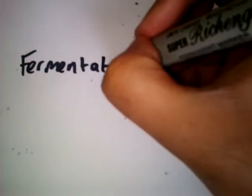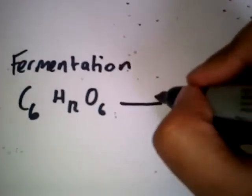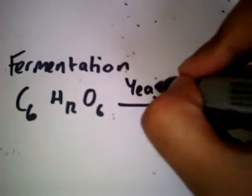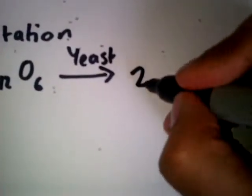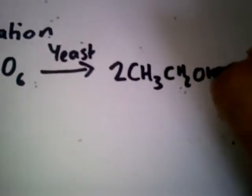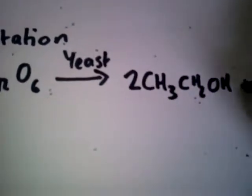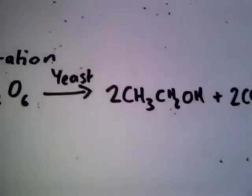So you have fermentation, which is where you have glucose. The formula for glucose is C6H12O6 plus yeast. So yeast is the enzyme. And you'll get CH3CH2OH, which is ethanol, plus 2CO2. Carbon dioxide is the byproduct. That's one mechanism for the manufacture of alcohols.